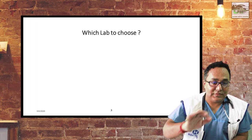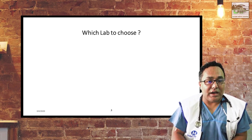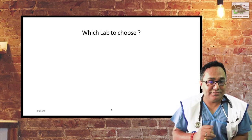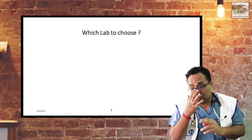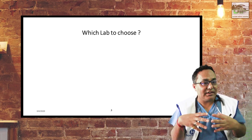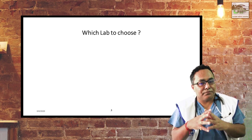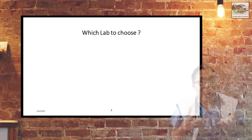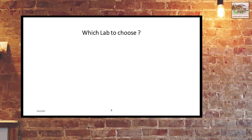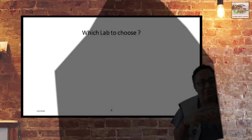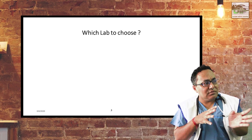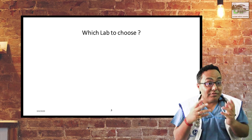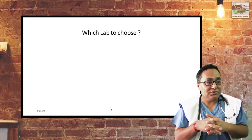Whenever a patient with thyroid disorder comes to your OPD, you can diagnose them when they come to the door itself. A patient with hypothyroidism will usually be lazy, overweight, and have swelling of the legs. A patient with hyperthyroidism will be anxious, thin, and have proptosis of the eye. So clinically you can guess, but there should be a confirmative test — for that you use lab tests.